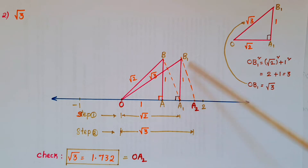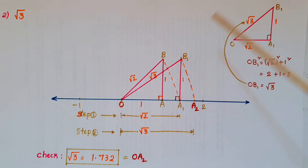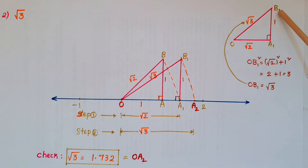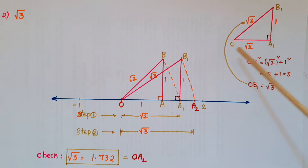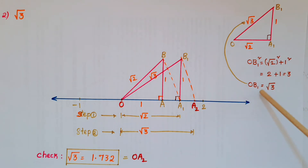That perpendicular is A1B1, forming right angle triangle OA1B1. Here OA1 is root 2 and A1B1 is 1. By Pythagoras theorem: OB1 squared equals root 2 whole squared plus 1 squared, which is 2 plus 1 equals 3. So OB1 is root 3.